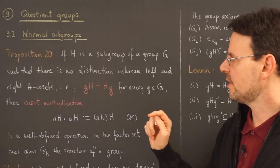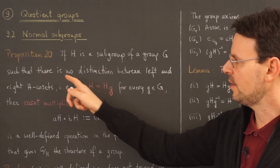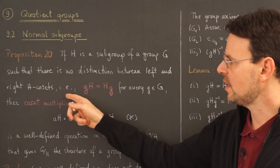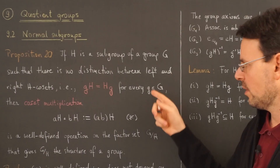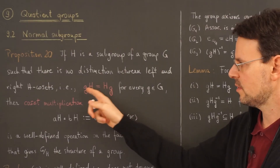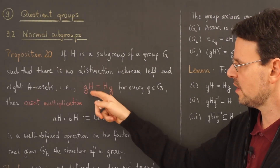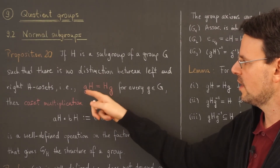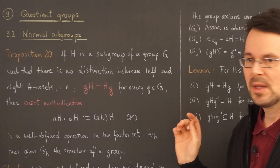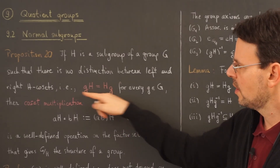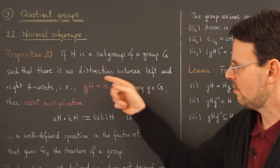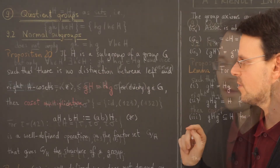H satisfies a special condition, namely that there is no distinction between left and right H cosets, meaning that for any arbitrary element of the group, the left coset gH is the same as the right coset Hg. Before we continue, let me make a very important observation about this condition first.